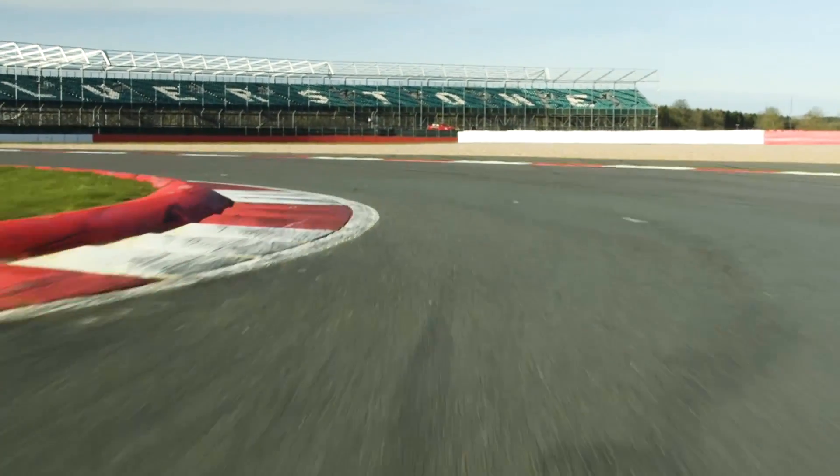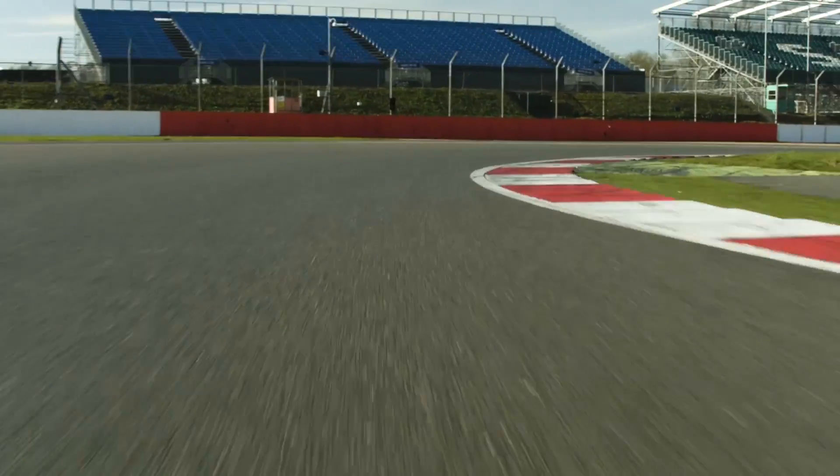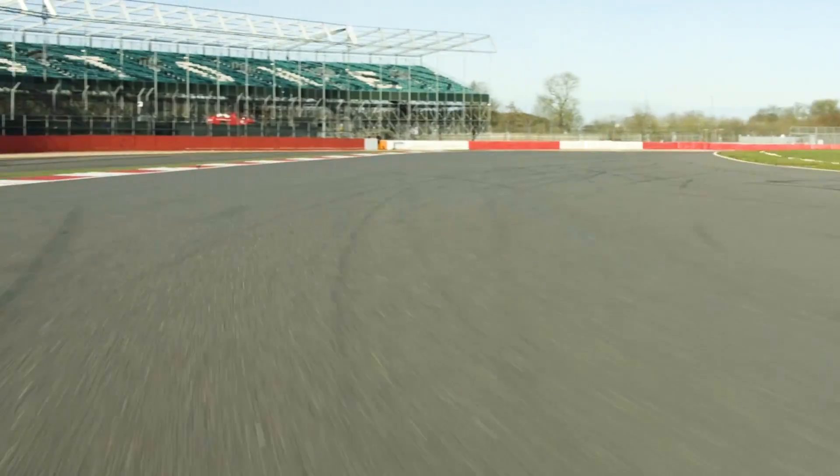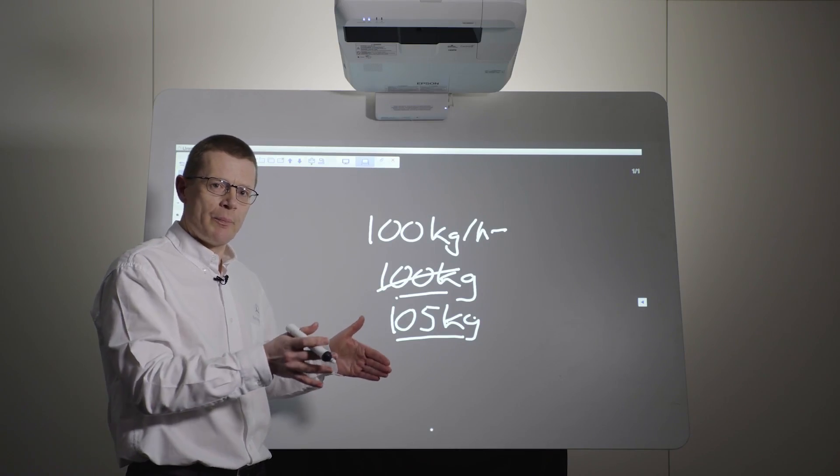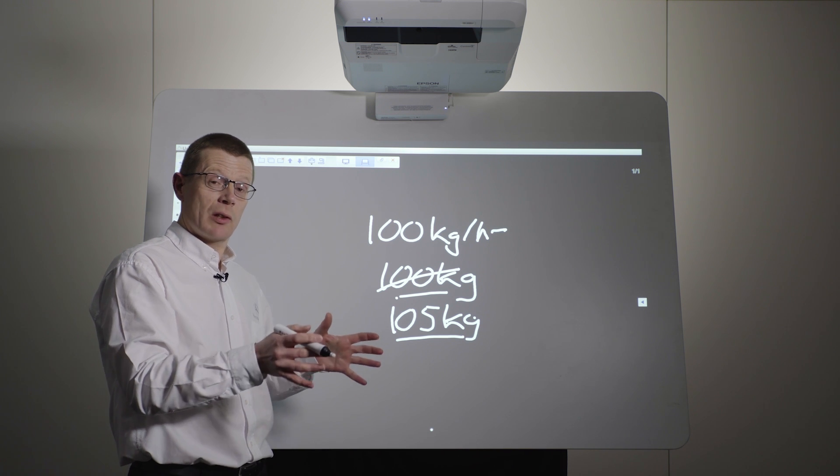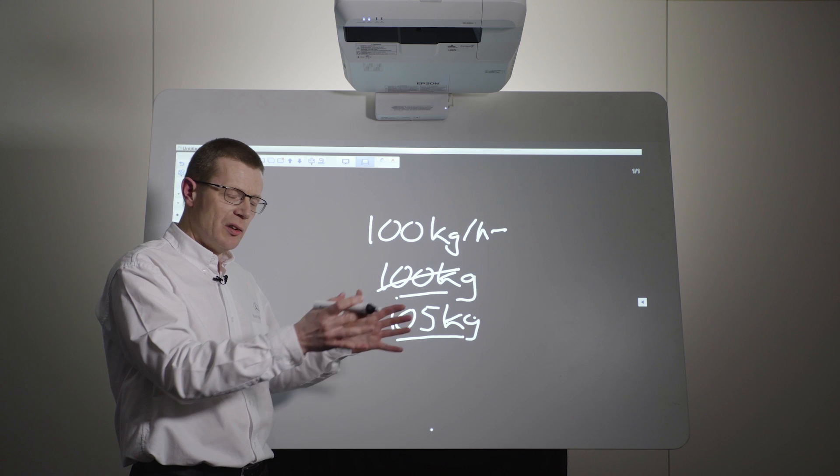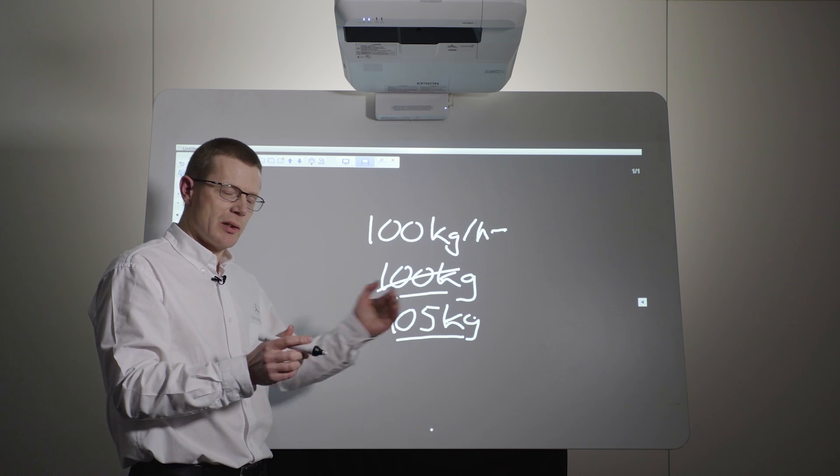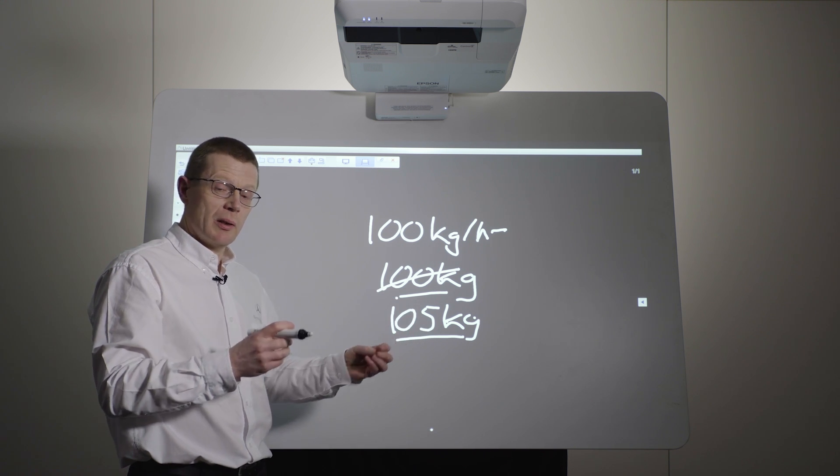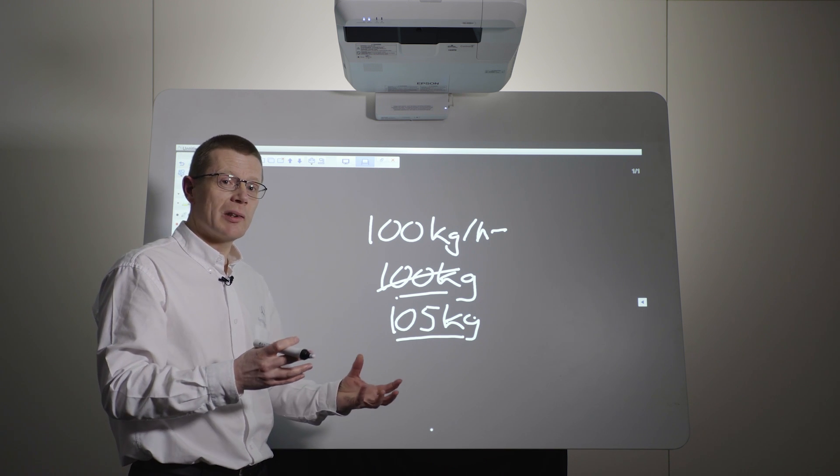If the car goes through the corner quicker, because the tyres are stronger and the aero is quicker, the lateral load on the car is higher. And the power unit is a critical structural element of the car. Right in the middle of the car, engine mounts front and rear connected to the chassis and the gearbox. So we've had to do a lot of detailed analysis on those.